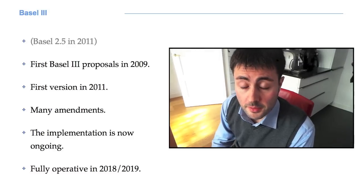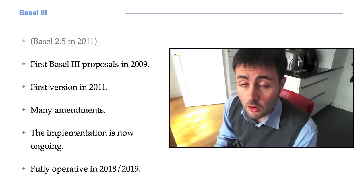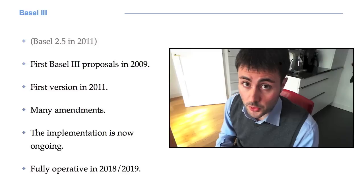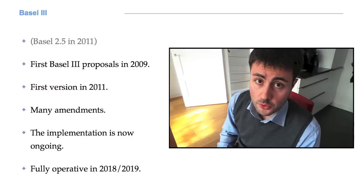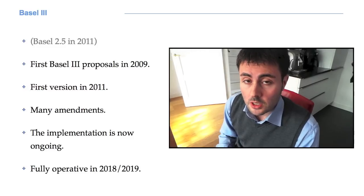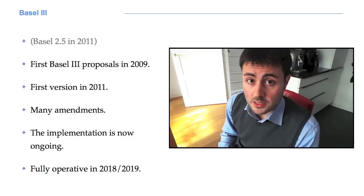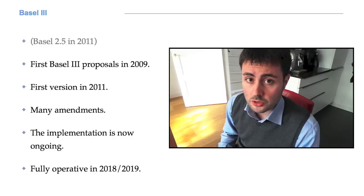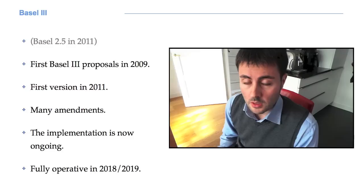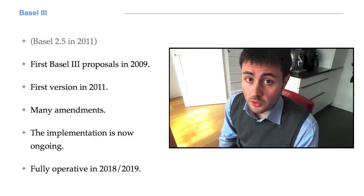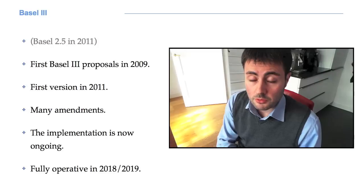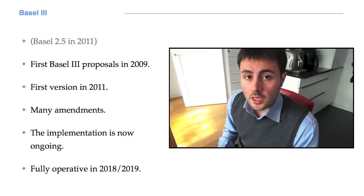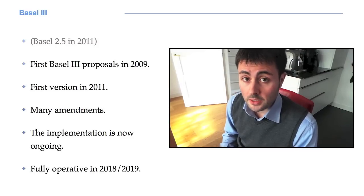In 2009, the Basel Committee started discussing a new version of the Basel Accords, thus opening the road to Basel 3. The first version of Basel 3 appeared in 2011, together with what is known as Basel 2.5, that is to say, a new set of more stringent rules for market risk. The implementation of Basel 3, which is more related to credit risk, started in 2013 and is now ongoing. It should be fully operative by 2019.